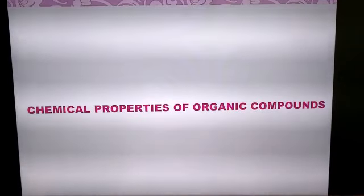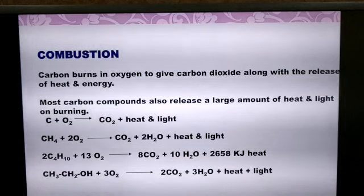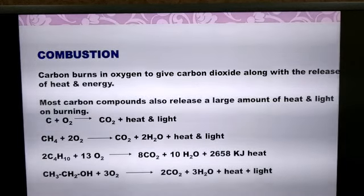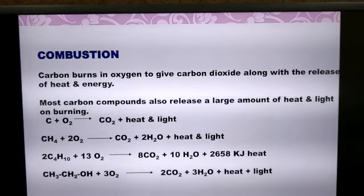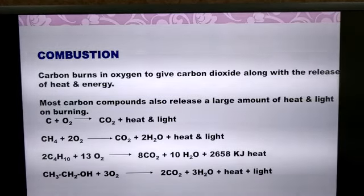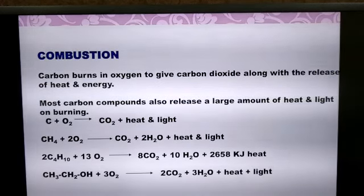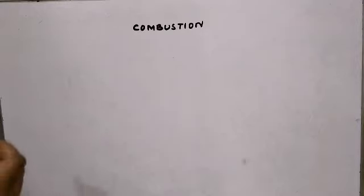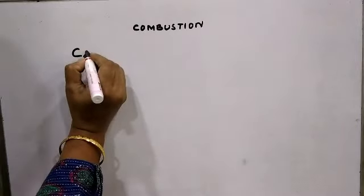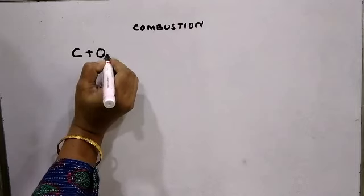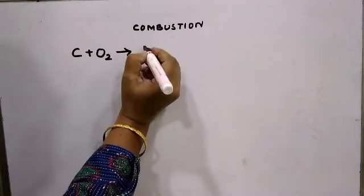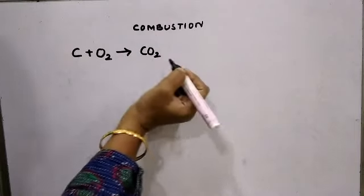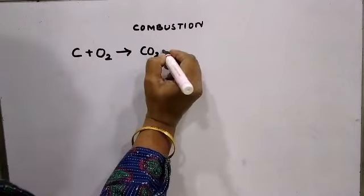Chemical properties of carbon compounds. Most carbon compounds burn in sufficient supply of oxygen to produce carbon dioxide, water, heat, and light. For example, if I take carbon, it burns in sufficient supply of oxygen to form carbon dioxide plus heat plus light.